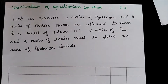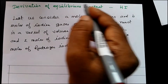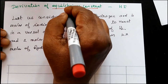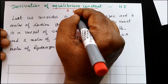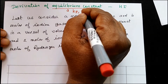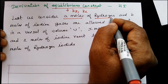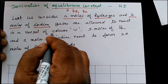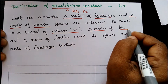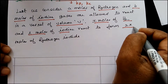Hello, welcome to High School Chem channel. In this video, we derive the equilibrium constant for the formation of hydrogen iodide. We have Kp and Kc — Kp is the equilibrium constant in terms of partial pressure, and Kc is the equilibrium constant in terms of concentration. Consider A moles of hydrogen and B moles of iodine; gases are allowed to react in a vessel of volume V. X moles of hydrogen and X moles of iodine react to form 2X moles of hydrogen iodide.